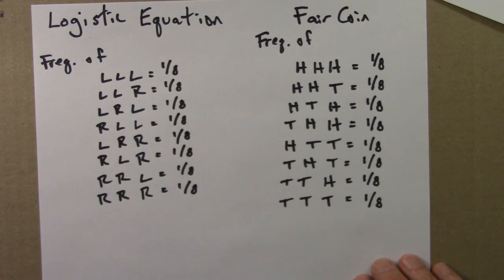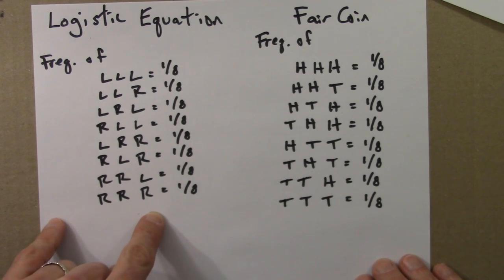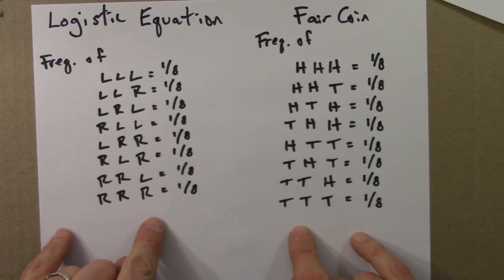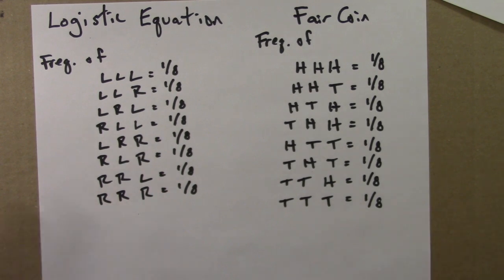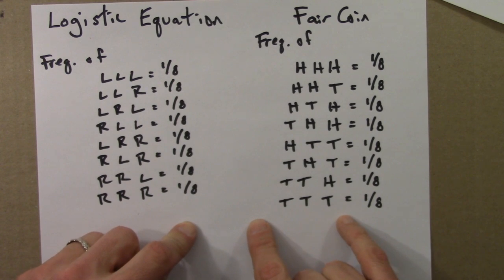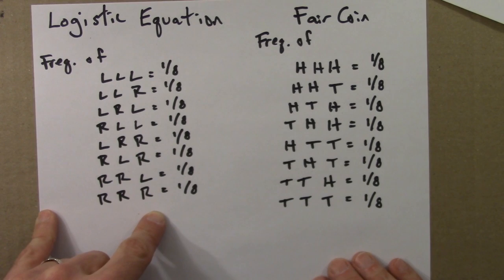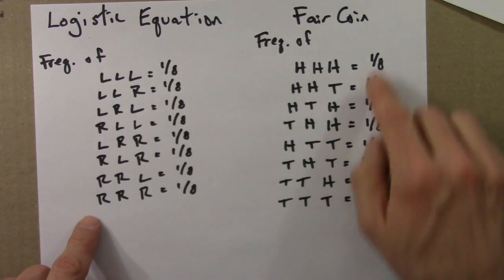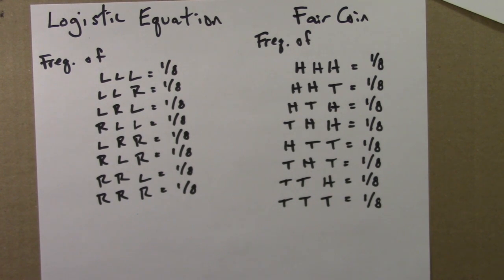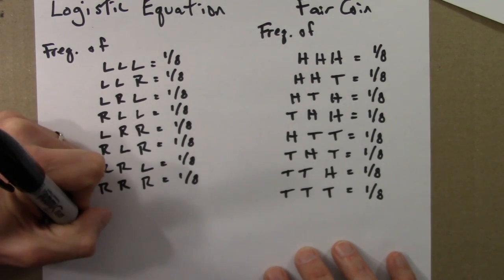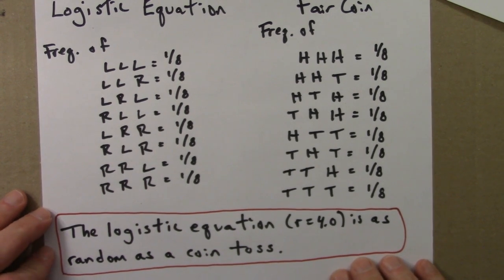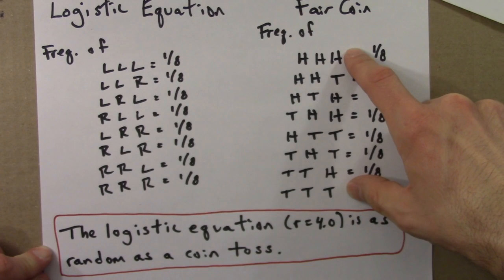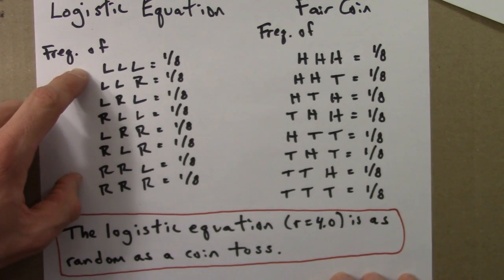We could keep doing these experiments — looking at four, five, or six consecutive symbols for both situations — and in all cases, all sequences occur equally often. If we considered all sequences of five possible coin tosses, they occur with equal frequency. The same story holds with the L's and R's. What this means is the logistic equation — particularly the symbolic dynamics with r equals 4 — produces sequences that are as random as a coin toss. For the coin, all possible sequences of H's and T's are equally likely. For the logistic equation, all possible sequences of L's and R's are equally likely.